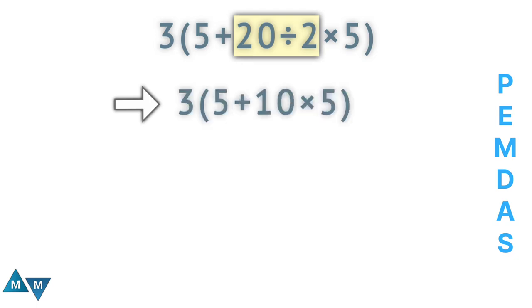So again, we are still working inside the parentheses. So now we have 5 plus 10 times 5, since multiplication has a higher priority. So 10 times 5 will be our first move, which equals 50.